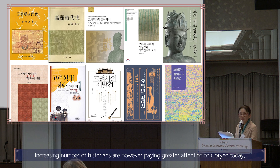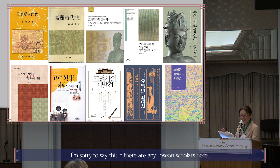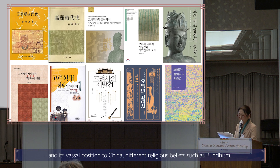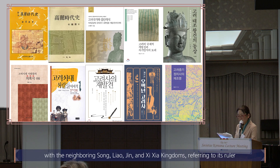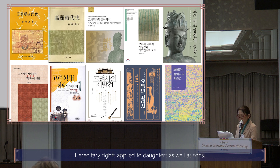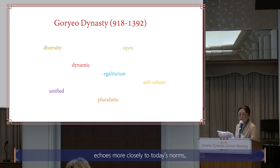An increasing number of historians are, however, paying greater attention to Koryo today, highlighting its relatively more open, egalitarian, dynamic and pluralist society than the following Chosun dynasty. Contrary to Chosun's strictly male-centered neo-Confucian axiom and its vassal position to China, different religious beliefs such as Buddhism, Confucianism, Taoism and native traditions co-existed in Koryo. Internationally it positioned itself on equal footing with the neighboring Song, Liao, Jin and Xixia kingdoms, referring to its ruler as emperor and not king. Hereditary rights applied to daughters as well as sons.